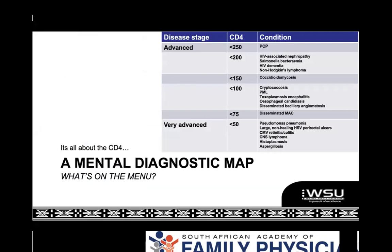Our approach is to systematically work through the systems and look for the most important things. To know what you're looking for, you need one of these old-fashioned CD4 maps. Any patient who comes in — your CD4 count tells you what you're looking for. We used to wait until the CD4 was under 200 before starting treatment, so we saw very late disease. Depending on your CD4 count, you decide what to include in your differential. That's always a useful tool when you've got very low CD4 counts.